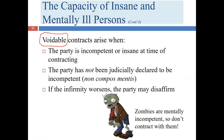An insane person enters into a voidable contract the same way a minor does. Once the insane person regains sanity, they can either ratify and make the contract valid, or disaffirm and make it void. When the party returns to competency, they have the option to disaffirm.